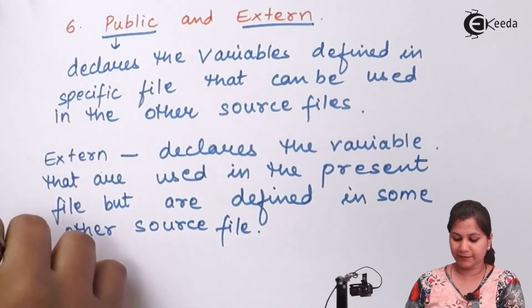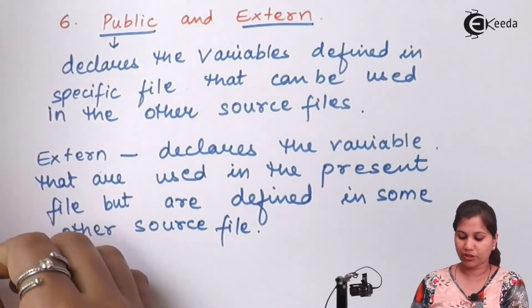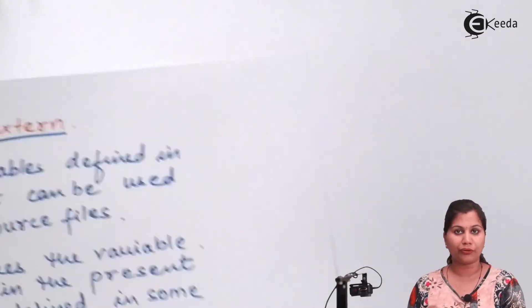So these are the six assembler directives used in the 8051 microcontroller: ORG, EQU, END, DS, DB, and PUBLIC and EXTERNAL. These assembler directives do not generate any machine code; they simply direct the assembler to perform some task. I hope this topic is now clear to you. Thank you.